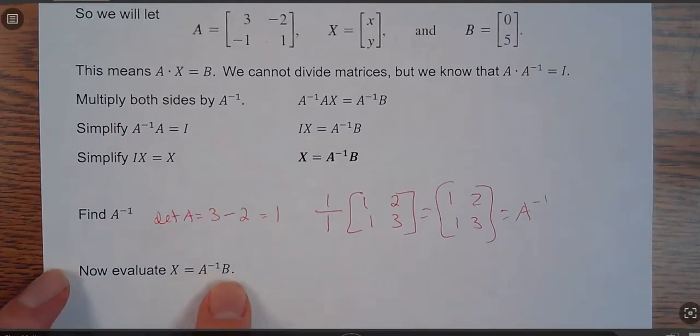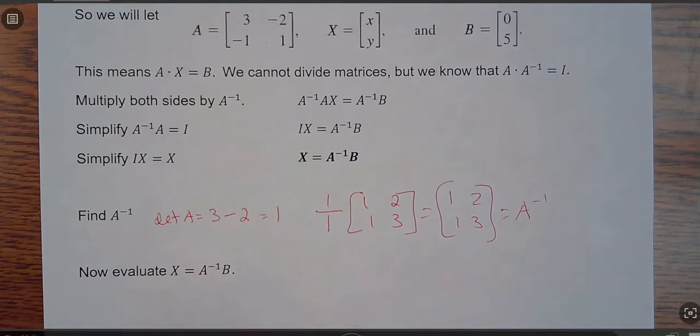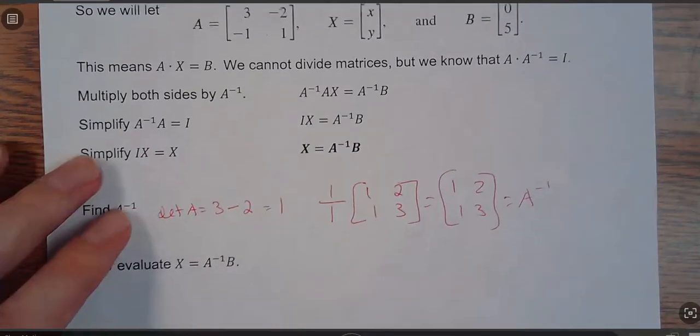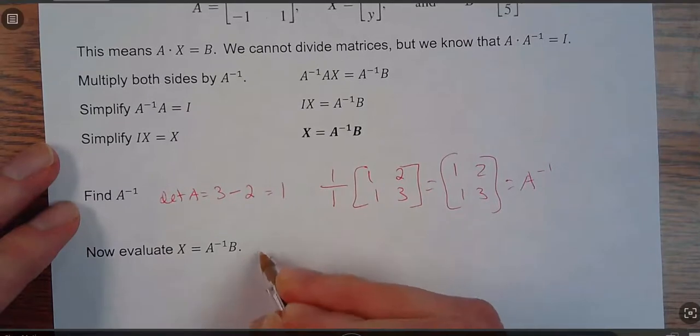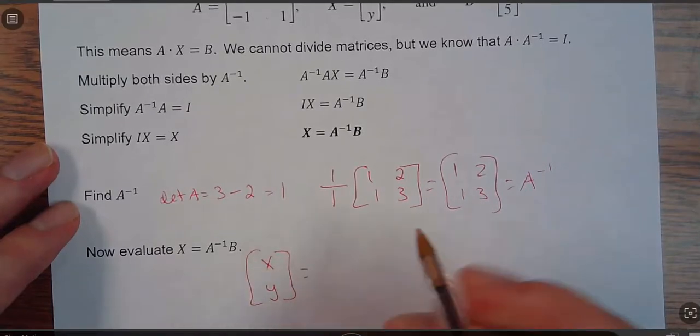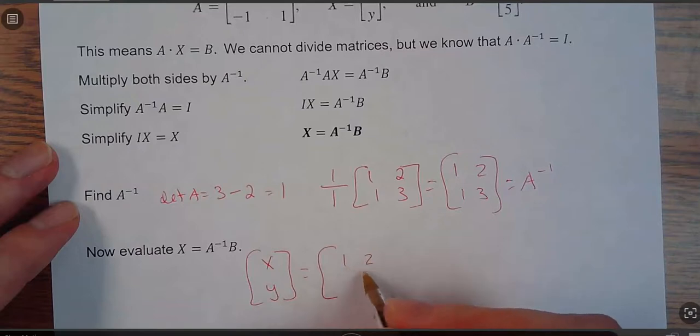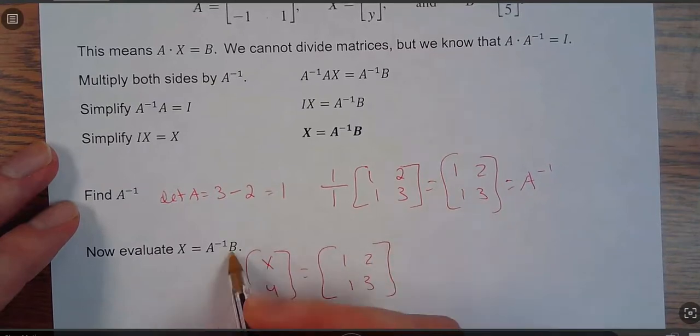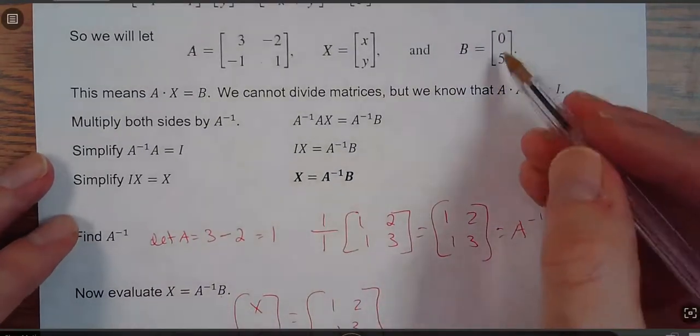So if I take the inverse times B, whatever I get when I multiply those together, that's what my x and y equal. So x, y, that matrix, equals 1, 2, 1, 3 times B, which is these answers, 0, 5.